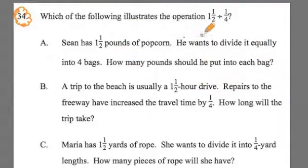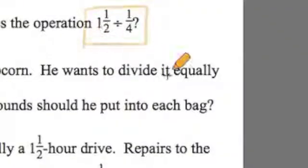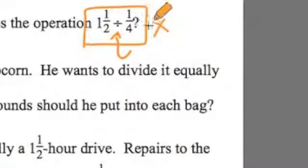When we have a problem like this, we first have to look at this number sentence here and have an idea of what that looks like. One trick is to think of whenever you see division by a fraction, that's the same as multiplying by the reciprocal. So the reciprocal of one fourth would flip it to get the reciprocal, and that would be four over one, so it would just be four. So really, we're doing one and a half times four, which would actually get you six.